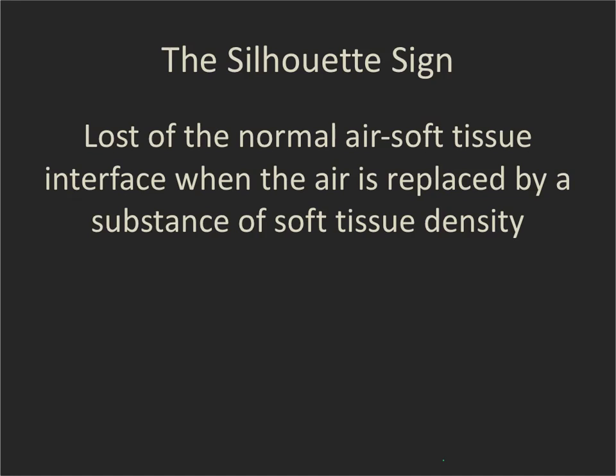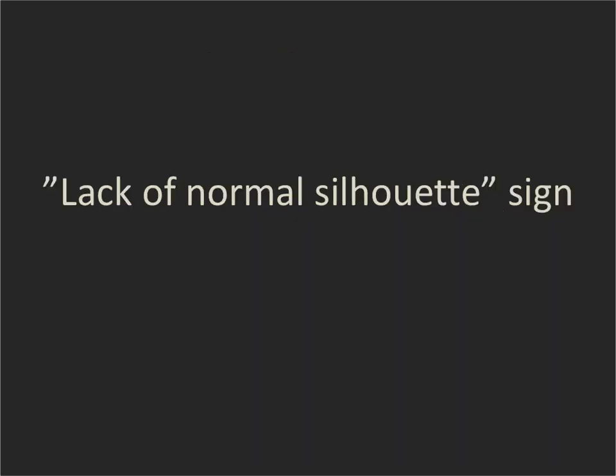The silhouette sign is the loss of the normal air-soft tissue interface when the air has been replaced by something of soft tissue density. It's not specific for what that is — it could be pneumonia, blood, hemorrhage, a mass or tumour, or pleural fluid. I always think it's a bit of a misnomer; it probably should be called the 'lack of normal silhouette sign' because you're taking away the normal silhouette.